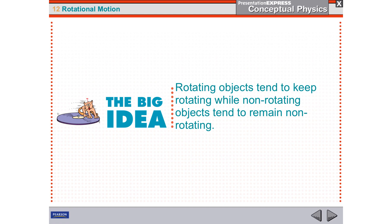If you remember inertia from Newton's first law, objects in motion tend to stay in motion in a straight line at a constant speed until acted upon by an external force. Objects at rest stay at rest unless acted upon by an unbalanced force. You're going to see the same with rotational motion. When something goes in a circle, it tends to want to stay going around in a circle if it's moving, and it wants to stay not going around in a circle if it's not moving.